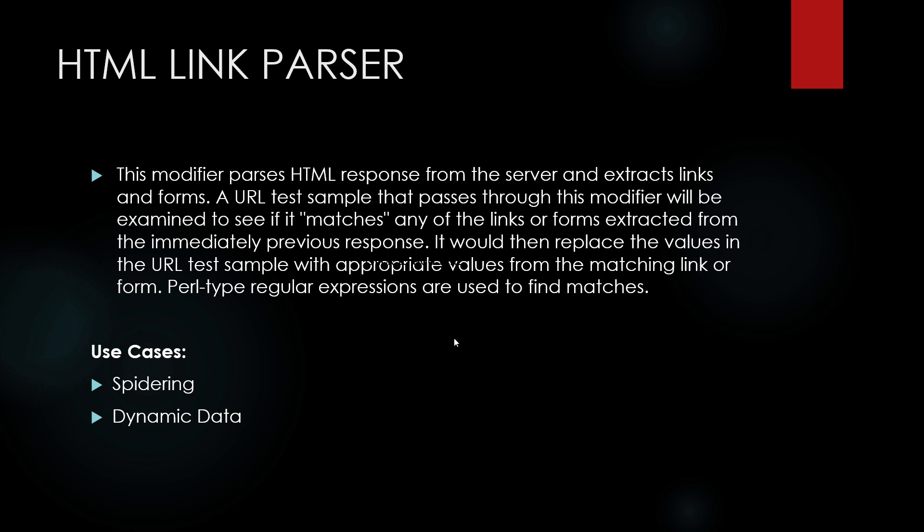What it will do is parse the HTML response from the server and extract the links and forms from that particular URL. There are two use cases for that: one is called spidering, and the other one is called dynamic data. Spidering means that you can randomly click on different links extracted using the HTML Link Parser. Dynamic data means that if you have data coming in the response, you can utilize that data in your script.